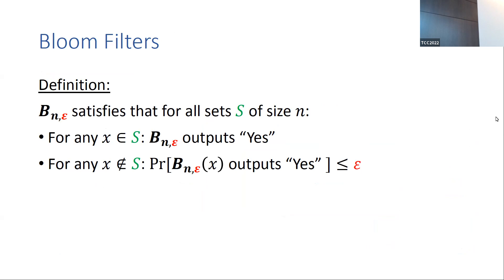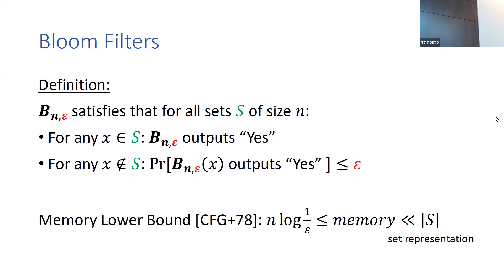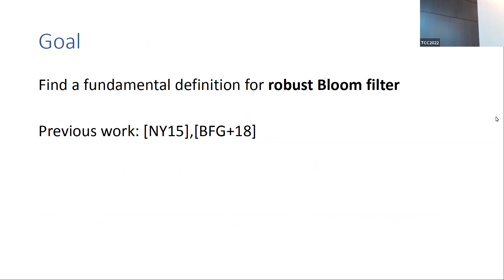As false positives have a negative impact on applications using bloom filters, it is important to ensure they are appropriately distributed. In our work we ask: what happens when we add an adversary to the game? Given a lower bound on memory found by Carter et al., if we wish to save space this ε must be non-negotiable. So it is not trivial how we should define the correctness guarantee — what does it mean for an adversary to succeed in finding false positives?